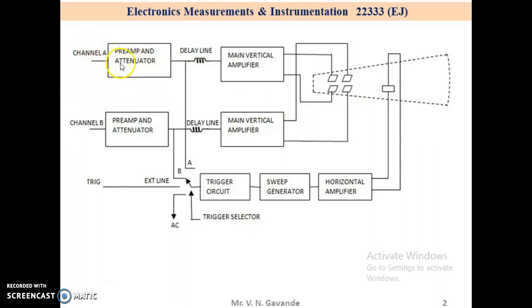Its own delay line, its own main vertical amplifier. Remember in a dual trace CRO we have common vertical amplifier, the bandwidth deciding circuit. In this case, channel B also consists of its own pre-amplifier attenuator, delay line and main vertical amplifier.